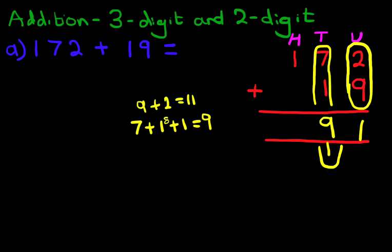We're now going to add the hundreds and the hundreds column. Well there's only the 1 over there. There's nothing over here. So that is simply just 1. And we have our answer. 191.